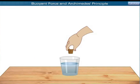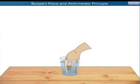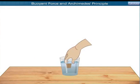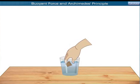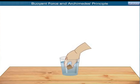Push a cork down into water taken in a tumbler. What do you observe? The cork rises up and comes to the surface as soon as we release it. Now, to keep it beneath the surface of water, we have to exert a downward force.